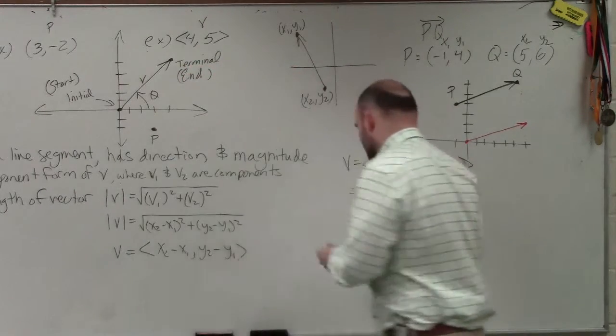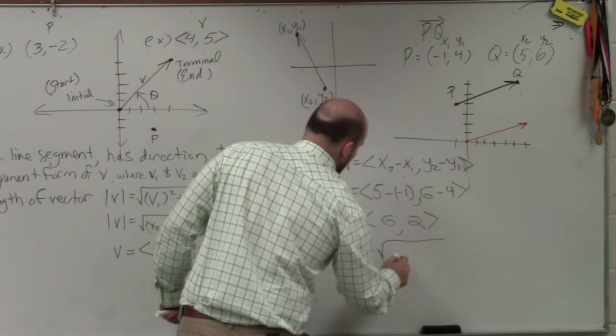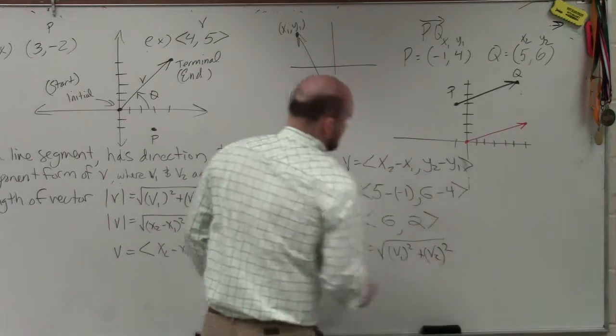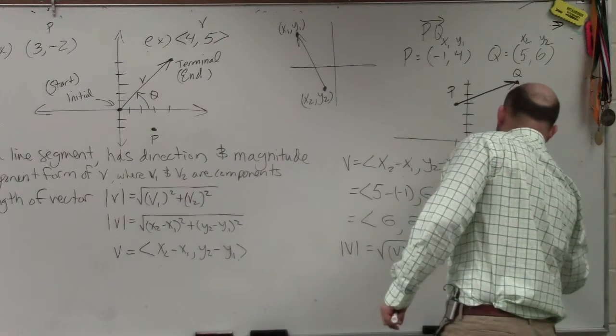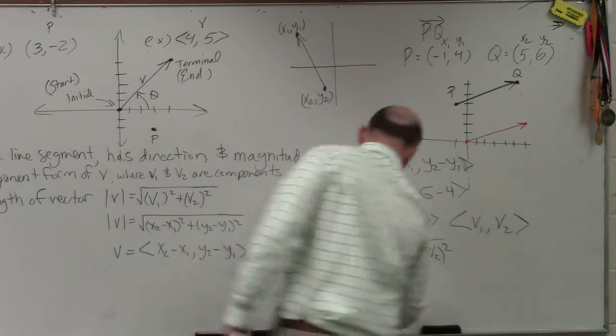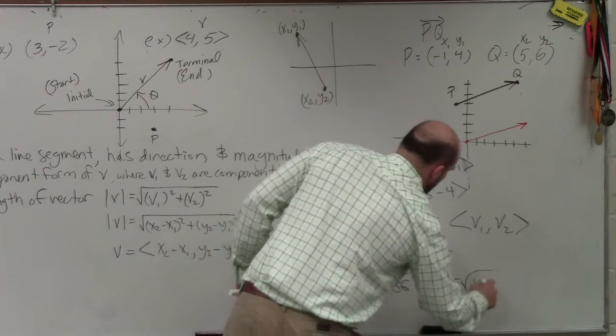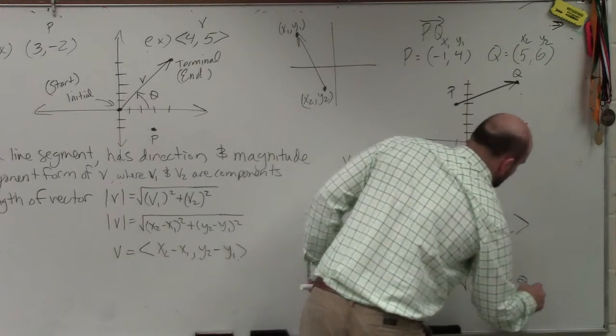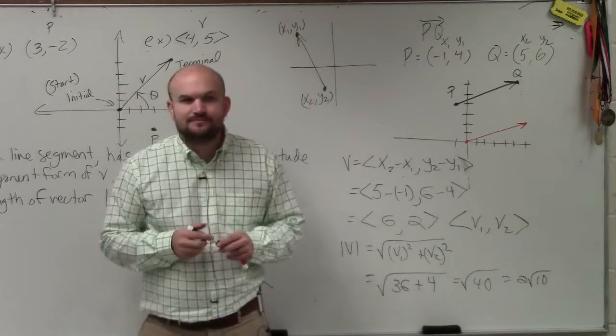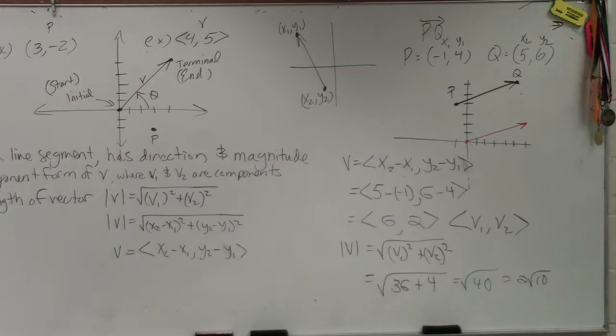So let's go ahead and figure out the magnitude. So my magnitude is going to be the square root of v1 squared plus v2 squared, where, remember v1 and v2? So therefore, all I'm simply going to do is take the square root. I have 36 plus 4. That equals the square root of 40, which equals 2 radical 10. So my magnitude is going to be 2 radical 10. That's it. Done. OK. So we covered magnitude.